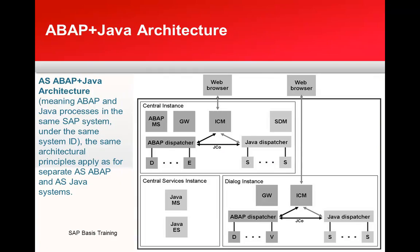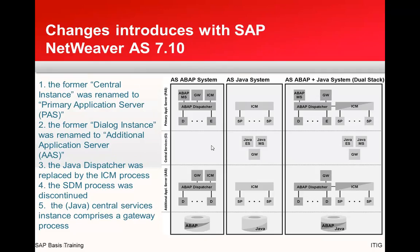In a dual-stack architecture, both the ABAP and Java sides sit in the same system. From SAP NetWeaver Application Server 7.1 onwards, terminology was changed: the central instance is now called the Primary Application Server; the dialog instance is called an Additional Application Server; and the Java dispatcher was replaced by the ICM process.